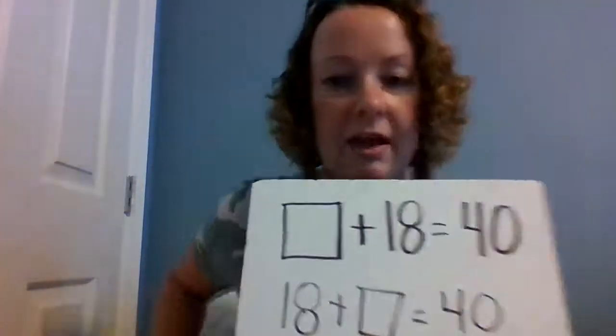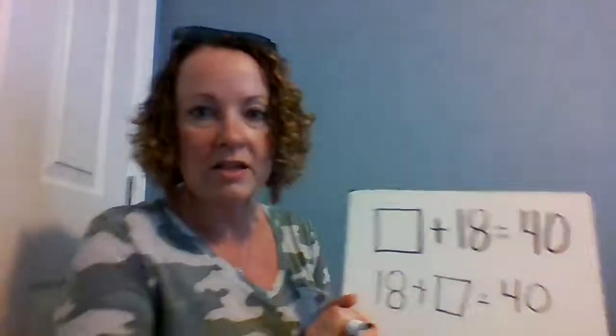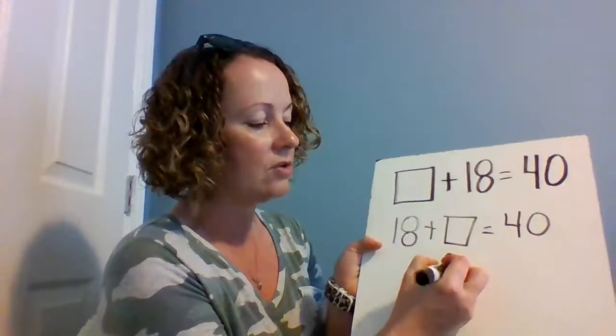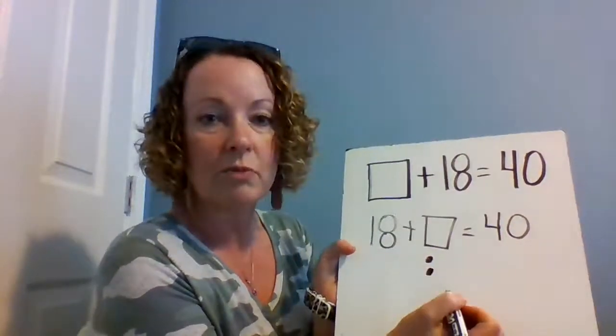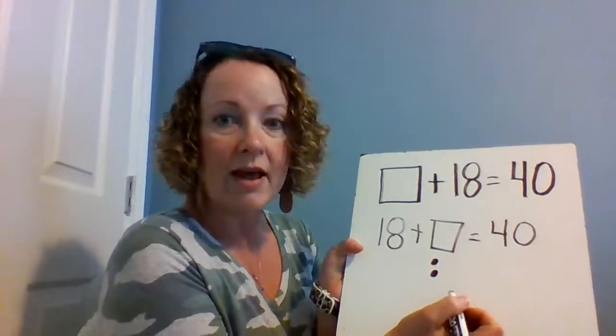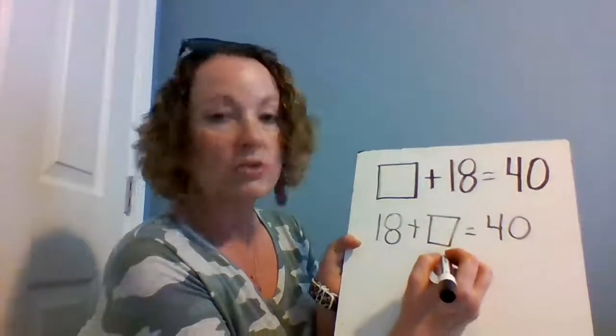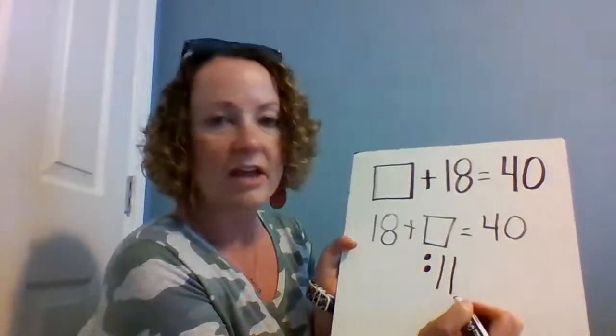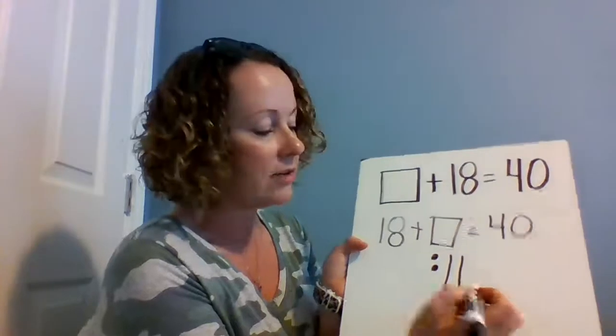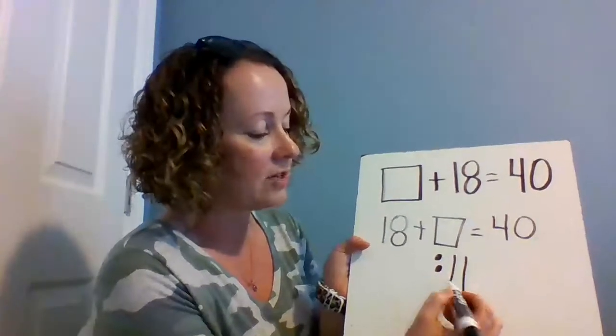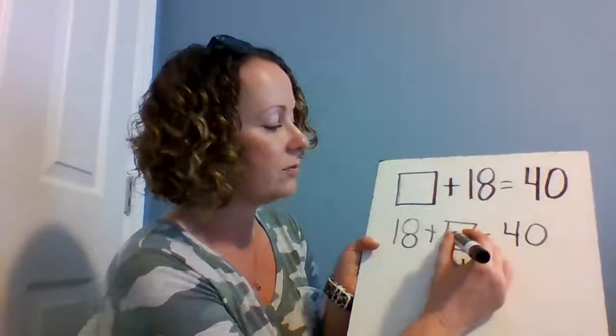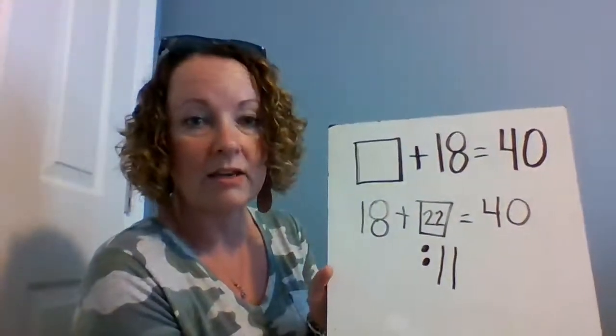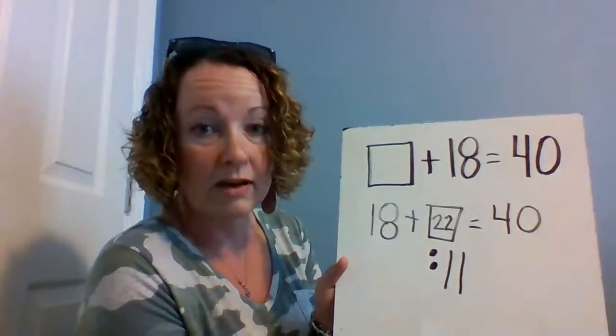That helps me with the strategy of counting on. So I'm gonna count on from 18 until I get to the next number that's a multiple of 10. 18, 19, 20. So 18 plus two more puts me at 20. And from 20 I can count on by tens. 20 plus 10 more is 30, add another 10 that's 40. Right? So let's count up what I've got. 10 plus 10 is 20 plus two more is 22. So I think that 18 plus 22 is 40.